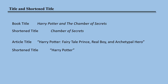Titles and shortened titles: book titles are italicized; article titles are enclosed in quotation marks. Full titles should be used the first time that an item is cited in a footnote, but shortened titles can be used in second and subsequent citations. The short title contains the keyword or keywords from the main title.